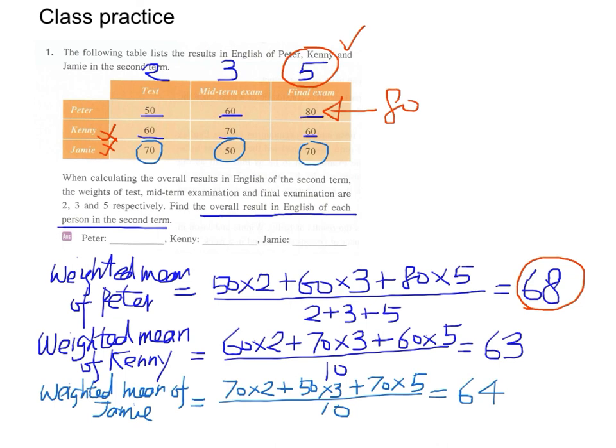And at the same time, we can also see that Peter actually scored very low mark in the test, 50 marks. But however, since the weight of the test is just 2, which is much smaller than that of the final exam, 5, the loss of Peter's mark in the test is much less because the weight is smaller.